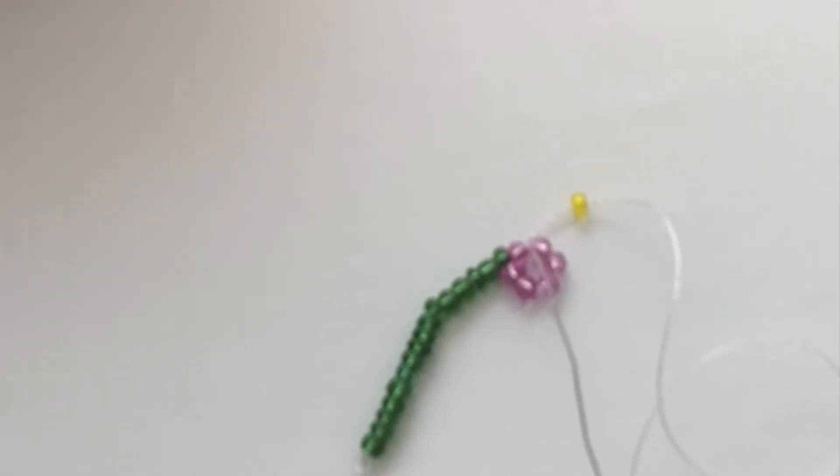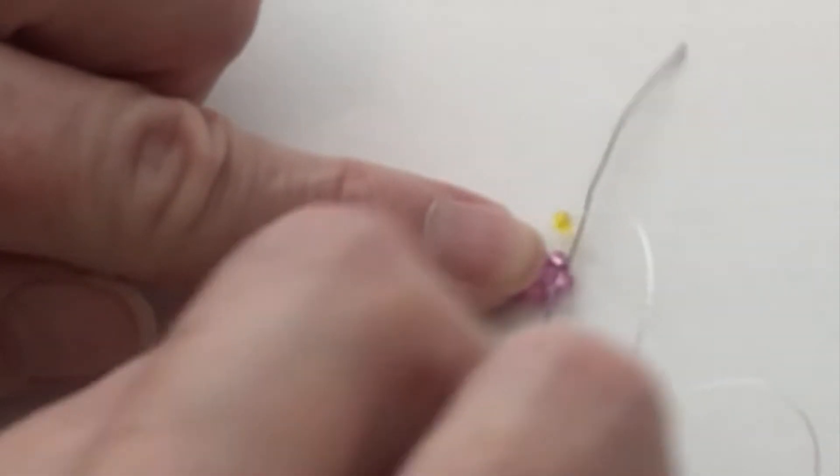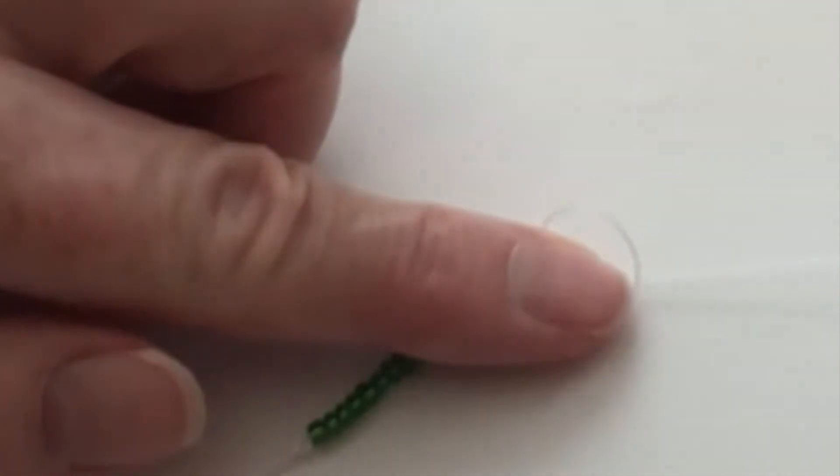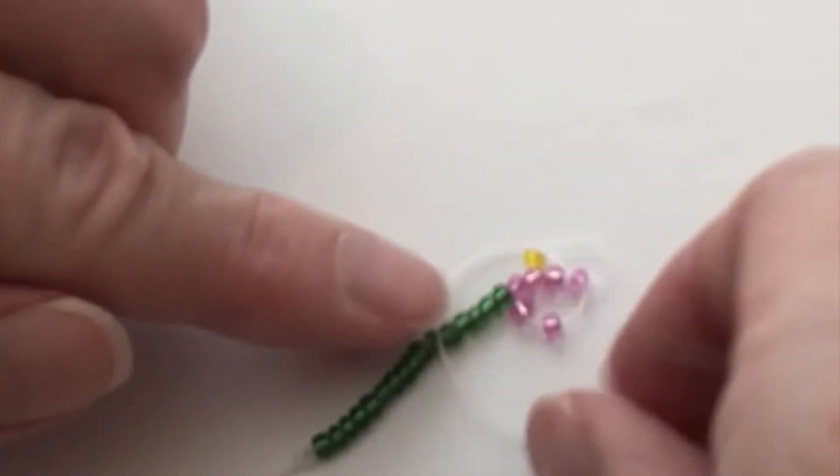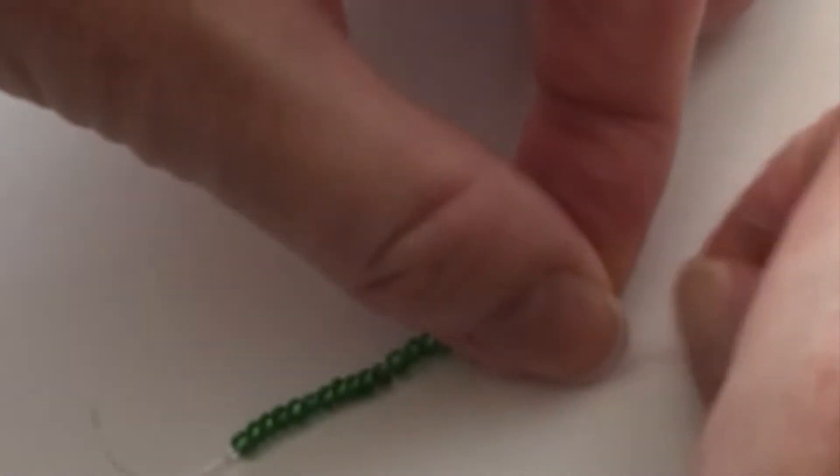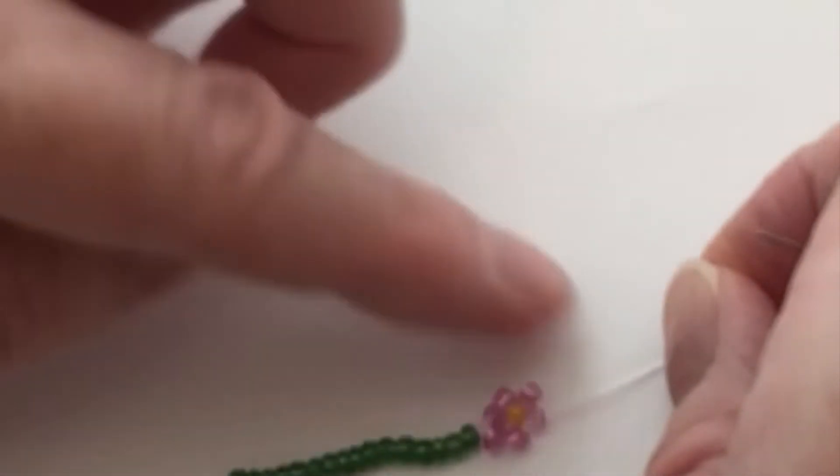You're going to want to put it in the opposite direction through bead number four. So count that bottom bead: one, two, three, four. The string is coming out this way, so we're going to put the string through the opposite direction of that fourth bead. And as we pull that snug, we want to make sure that yellow bead or the center bead goes in the middle of the flower, and then we tighten everything up.